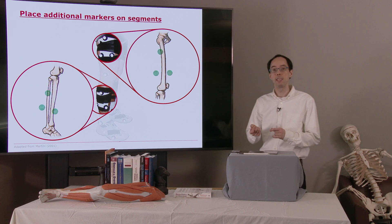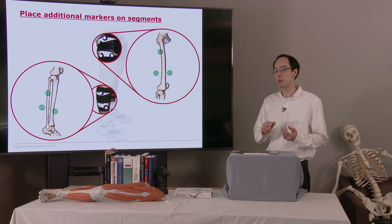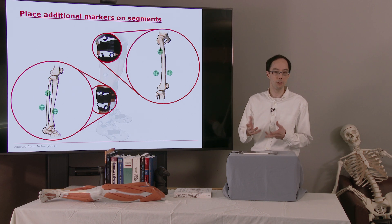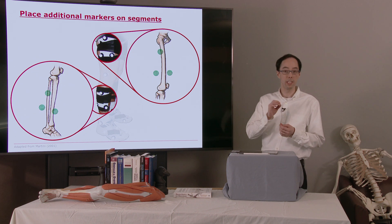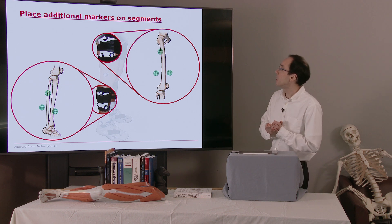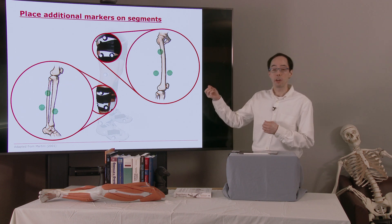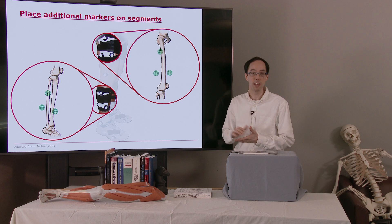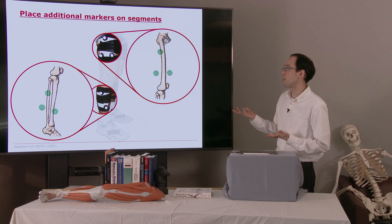Now, you might have noticed when we defined the anatomical reference frames, some of the markers weren't in particularly convenient locations. For example, the markers on the inside of the leg are very likely to be rubbed off as you're walking. So what you might do instead is put markers somewhere else on the body segments. We would call these tracking reference frames.